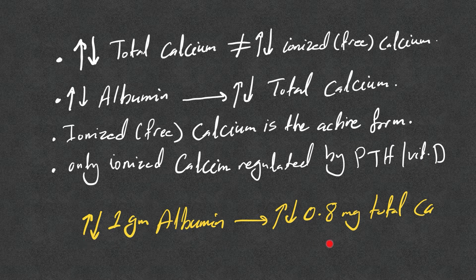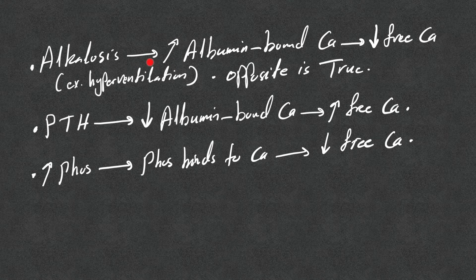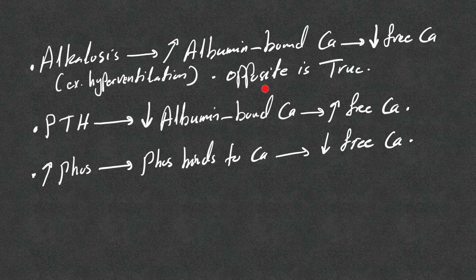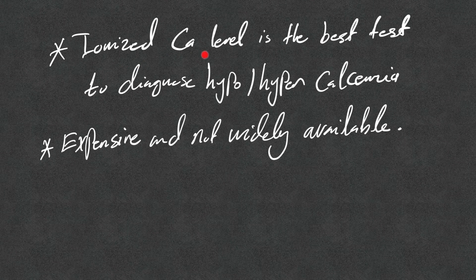We always correct total calcium to albumin: any increase or decrease of one gram of albumin roughly leads to increase or decrease of 0.8 mg in total calcium. Alkalosis increases albumin-bound calcium, which decreases free calcium — for example, in hyperventilation. Acidosis does the opposite: it decreases albumin-bound calcium and increases free calcium. PTH decreases albumin-bound calcium and increases free calcium. High phosphorus (hyperphosphatemia) binds to calcium, leading to decreased free calcium.